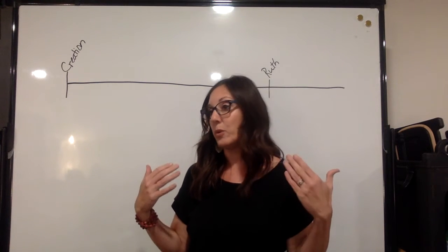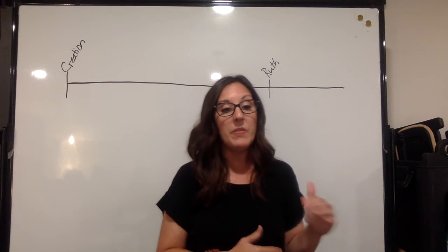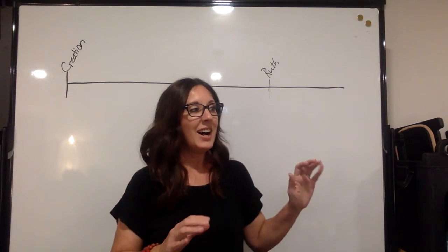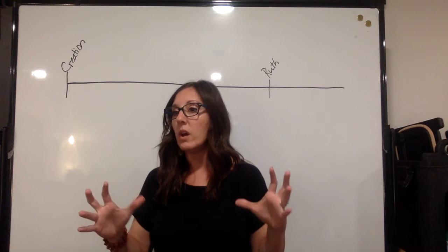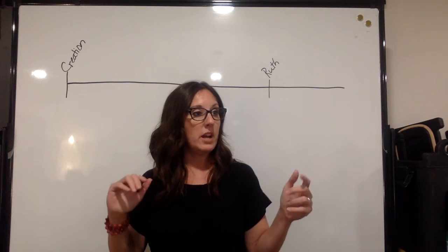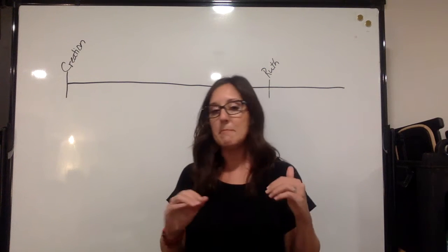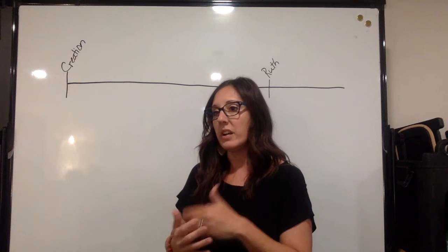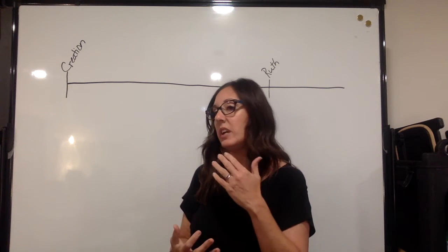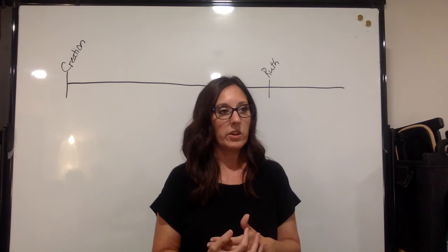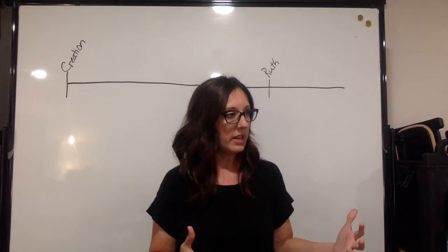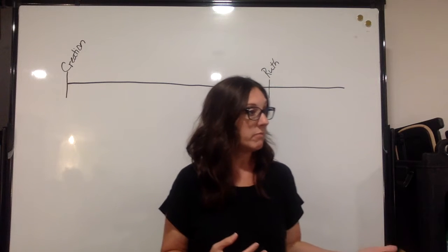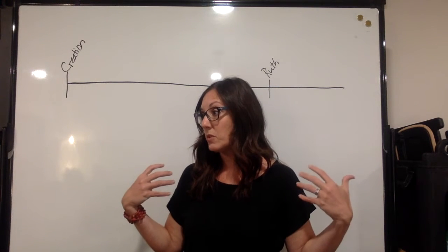I'm going to begin by teaching through Ruth chapter one, and then you all are going to break up into study groups. We've got tables set up and we may need to set up another table. For this first semester you can choose your study group — we'd like it to be no more than six counting your table leader, and I have table leaders standing by. Their job is just to facilitate the conversation.